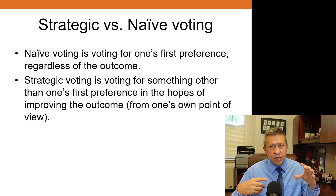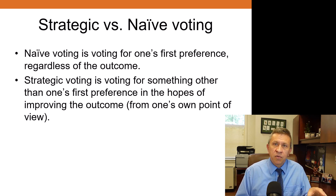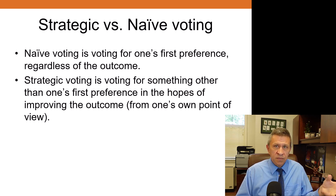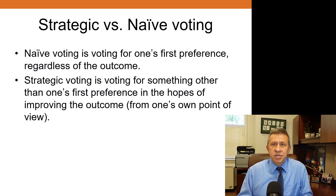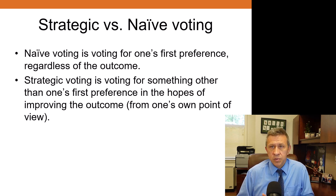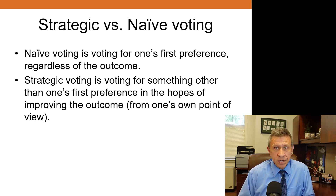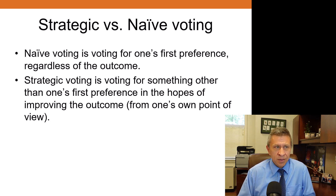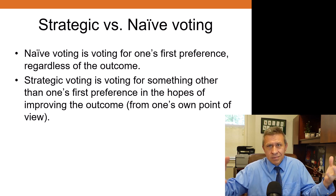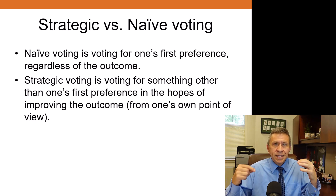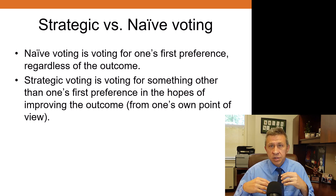Strategic voting means voting for something other than your very first preference in hopes of improving the outcome. If you preferred Ralph Nader but he couldn't win, you'd ask: would I rather have George W. Bush or Al Gore? The same applied to Buchanan supporters. I would argue that in most presidential elections, almost everybody is strategic voting — you could write in anyone you want, but nearly 99.95% of the population votes strategically.